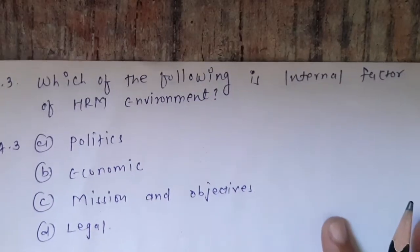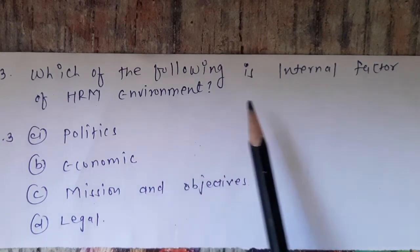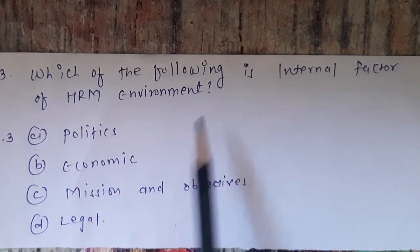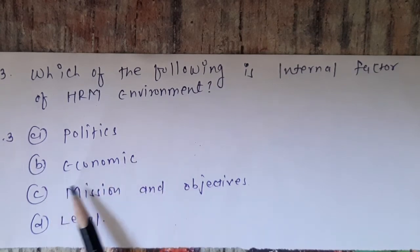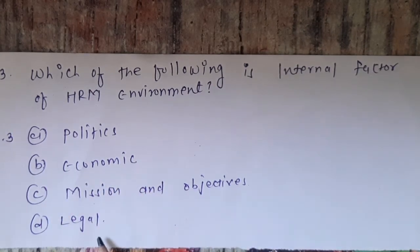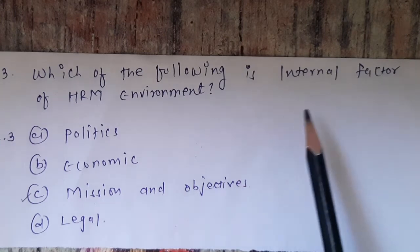Question 3: Which of the following is an internal factor of HRM environment? Options are: A) Politics, B) Economic, C) Mission and objectives, D) Legal. The correct answer is option C — Mission and objectives is an internal factor of HRM environment.